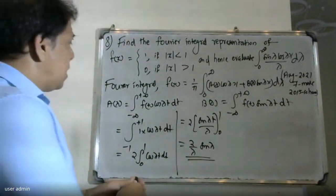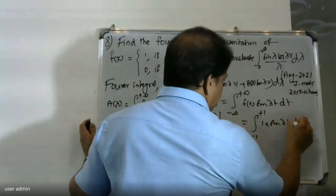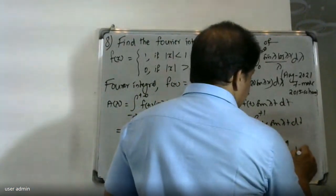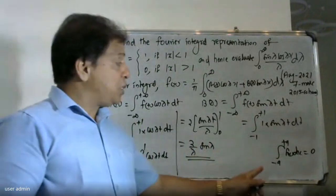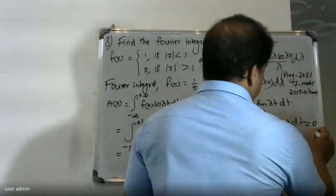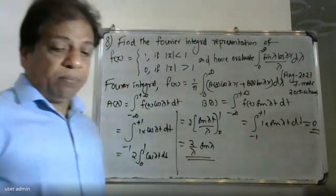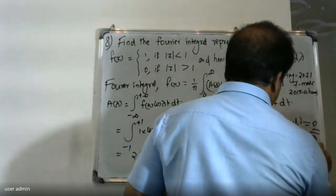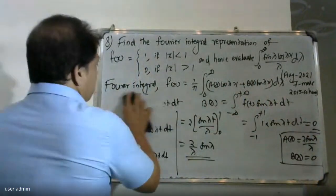Since sin(lambda t) is an odd function, B(lambda) equals zero, because the integral from minus a to a of an odd function is zero. So A(lambda) is equal to 2 sin(lambda) divided by lambda, and B(lambda) is equal to zero.